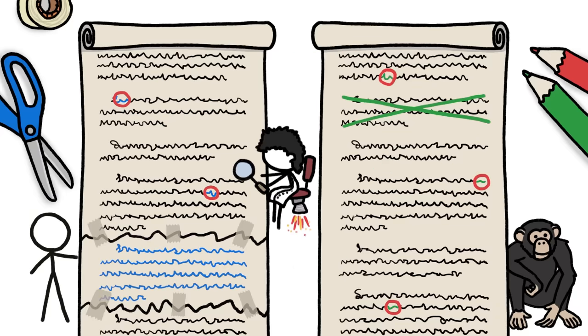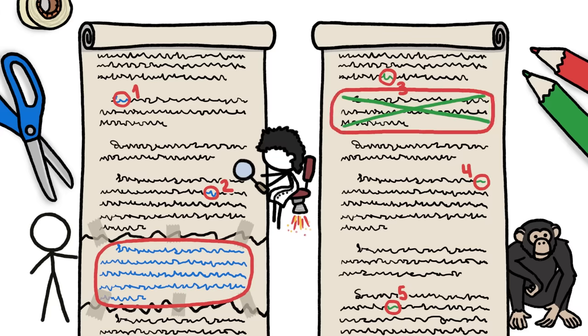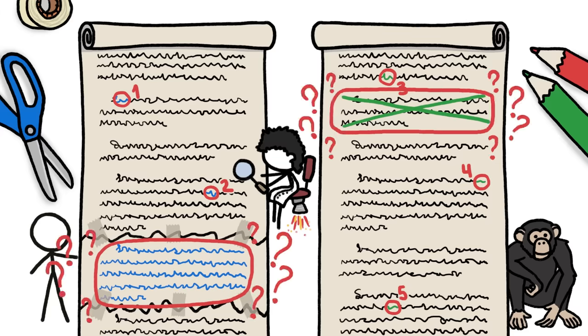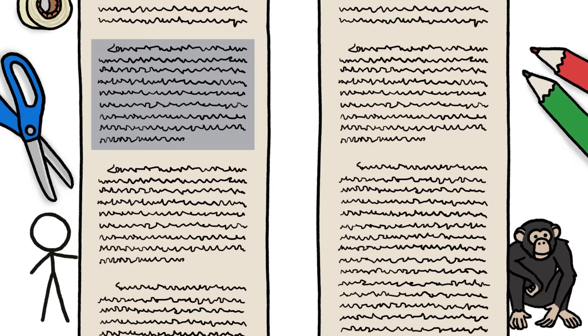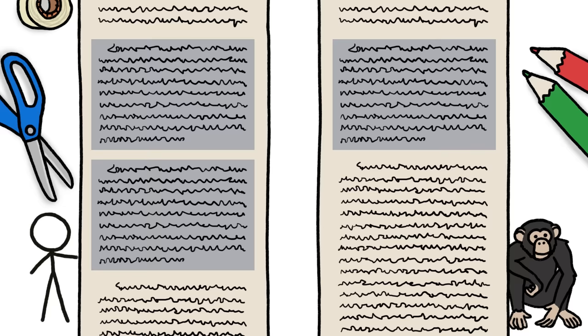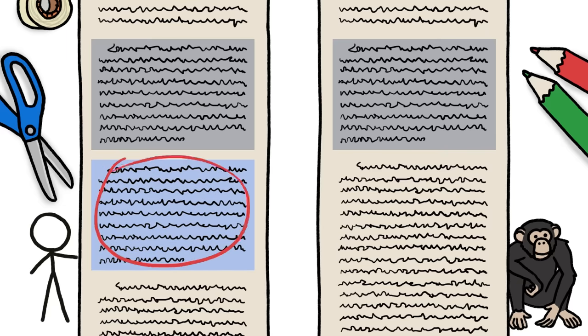When researchers sat down to compare the chimp and human genomes, those single-letter differences were easy to tally. But the big mismatch sections weren't. For example, if a genetic paragraph, thousands of letters long, appears twice in a human scroll, but only once in its chimp counterpart, should that second human copy count as thousands of changes, or just one?